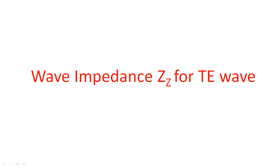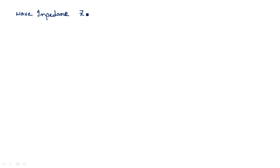In this video I am going to explain about wave impedance — the definition and derivation for TE wave. We will calculate the expression for TE wave as well as TM wave. Wave impedance is indicated by Z. If it is calculated for a TE wave it is Z_TE; if it is for a TM wave it is Z_TM.